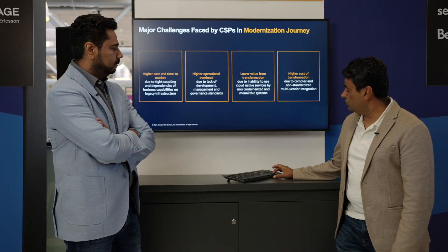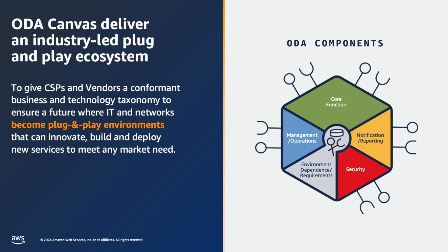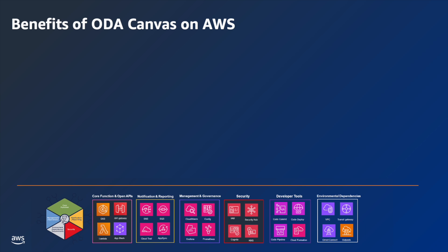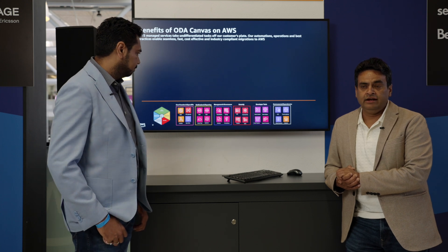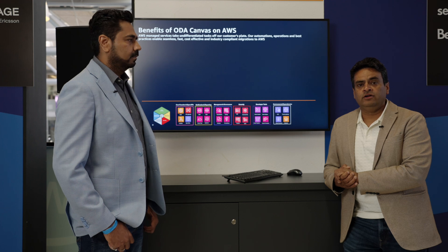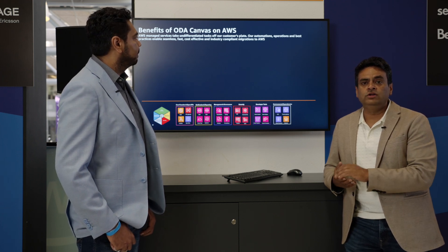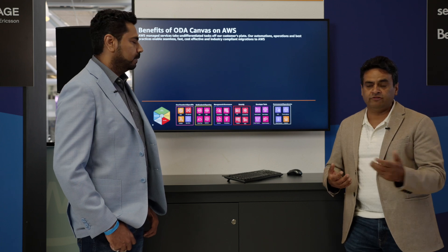AWS Canvas is solving the challenges that Telcos face in their modernization journey. In 2023, TM Forum released ODA Canvas, whose goal is to enable interoperability across multiple environments so that a workload is independent of where it is deployed. On top of that TM Forum ODA Canvas reference, we are releasing AWS native Canvas today. With our launch partner, Bell Canada, we will show how Canvas uses AWS native services and the value it derives from them.